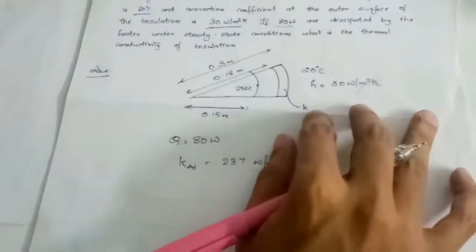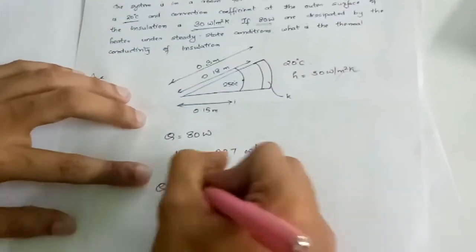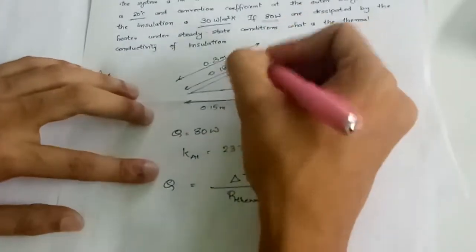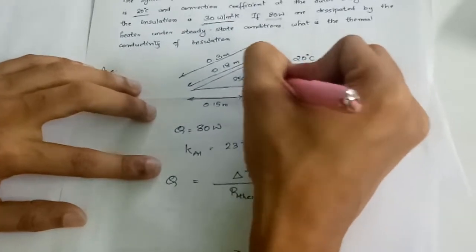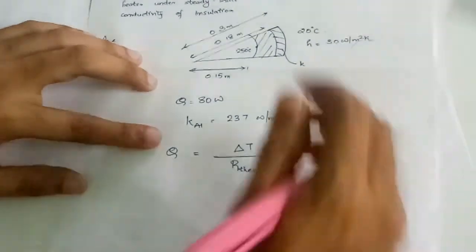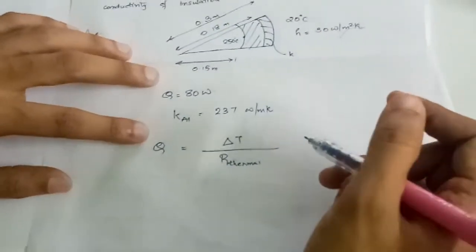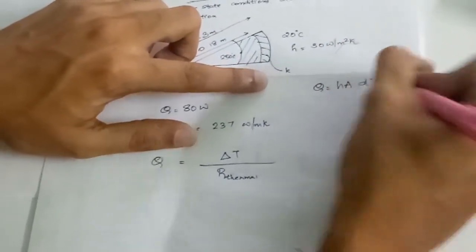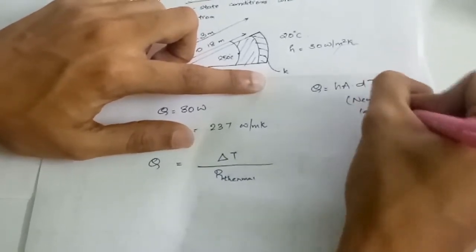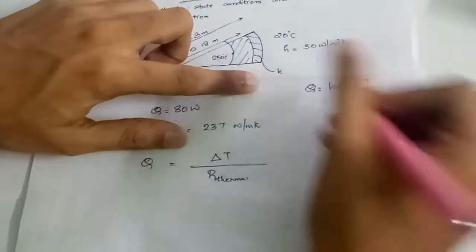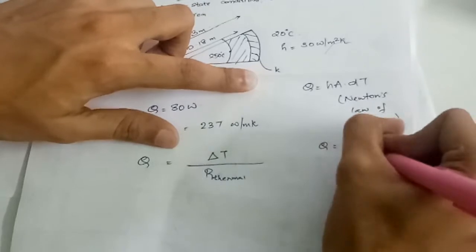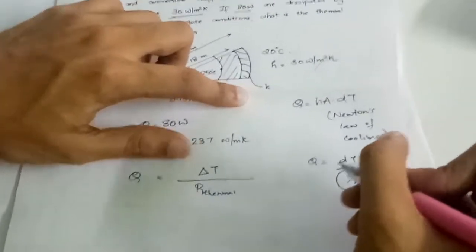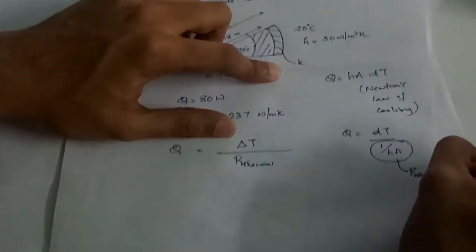The equation used is Q = ΔT / R_thermal. The thermal conductivity of aluminum is approximately 237 W/mK. There are two different materials — aluminum and insulation — so there are two thermal resistances. Additionally, convection at the outer surface follows Newton's law of cooling, giving Q = ΔT / (1/hA). The convection thermal resistance is 1/(h·A).